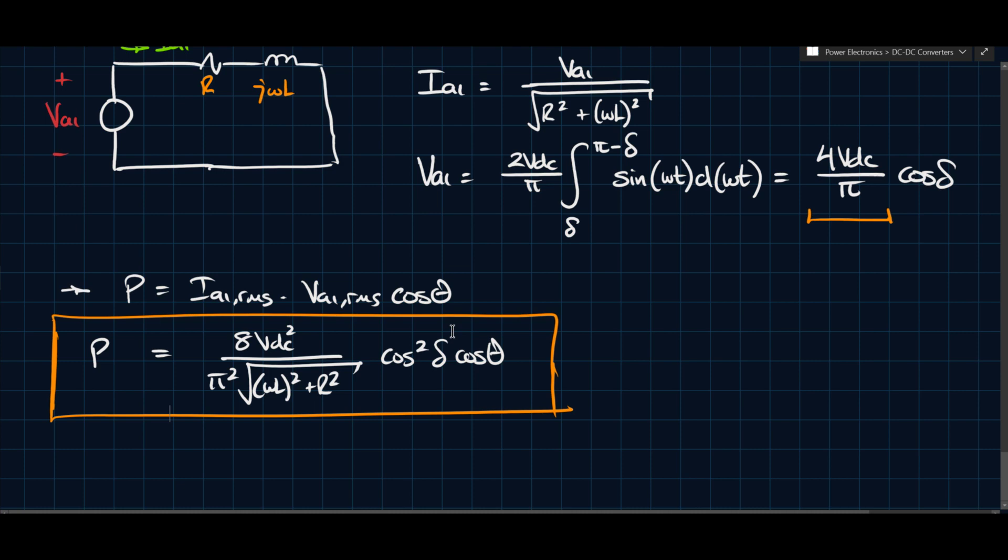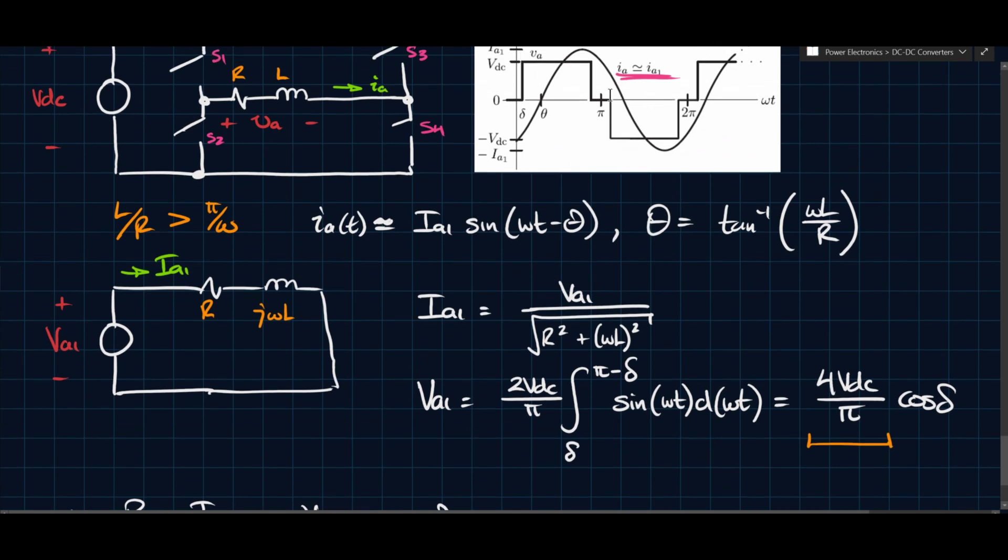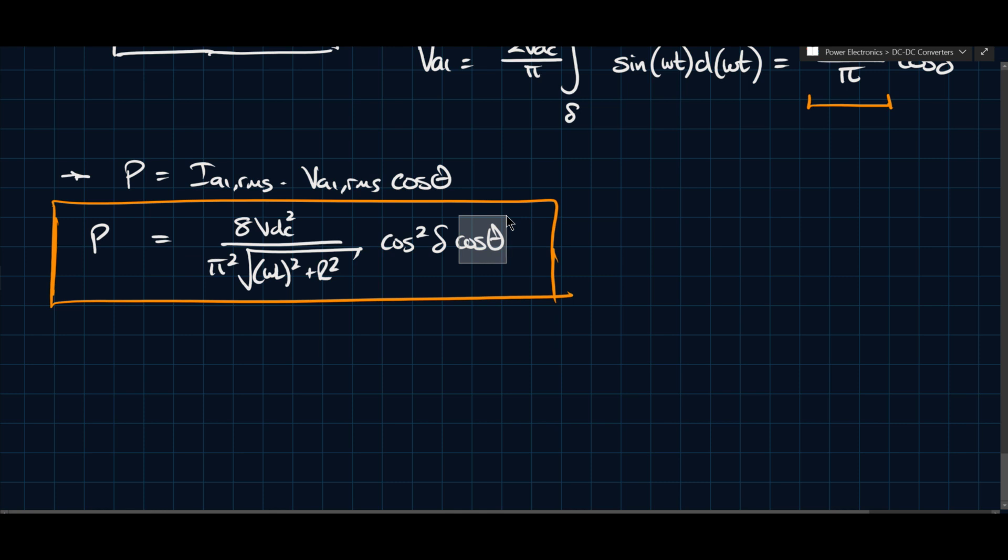But in this case, we're seeing there's an added theta term. And this theta term was not here in the previous case. So this theta has to do with the fact that these two are not completely in phase. And there will inevitably be some phase shift between them. So to account for that, we include this power factor.